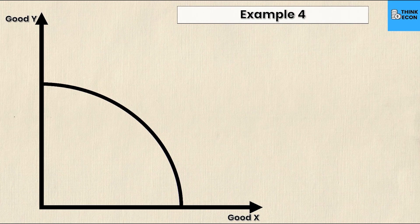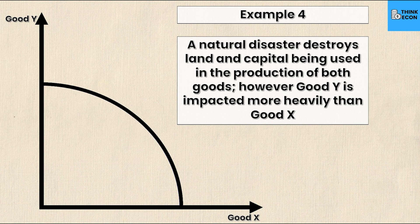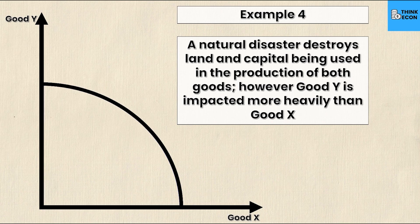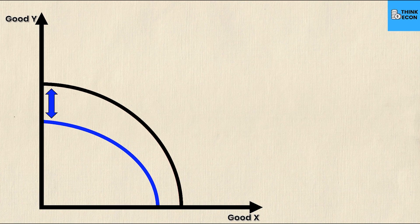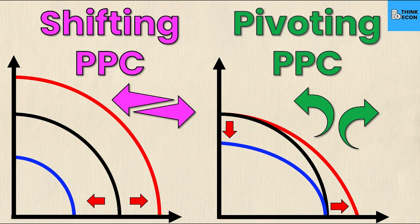Example four: a natural disaster destroys land and capital used in producing both goods, but good Y is impacted more heavily than good X. Both intercepts will change. A natural disaster destroying land and capital means I can produce less of both goods — costs have risen and fewer factors are available. The key is the magnitude: good Y is impacted more heavily, so the y-intercept moves more toward the origin than the x-intercept does. Both production of good Y and good X decrease, but good Y decreases more — because the question told us so.